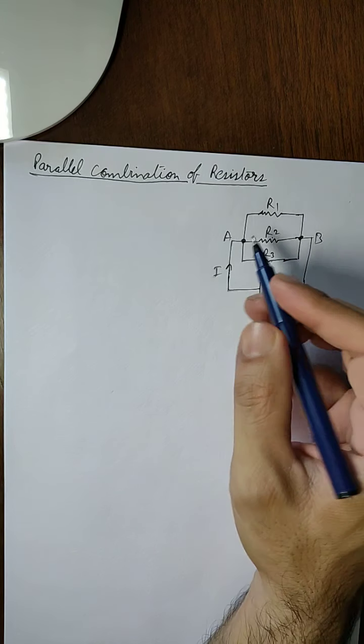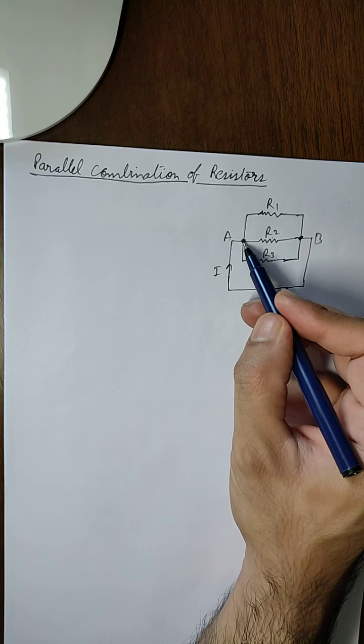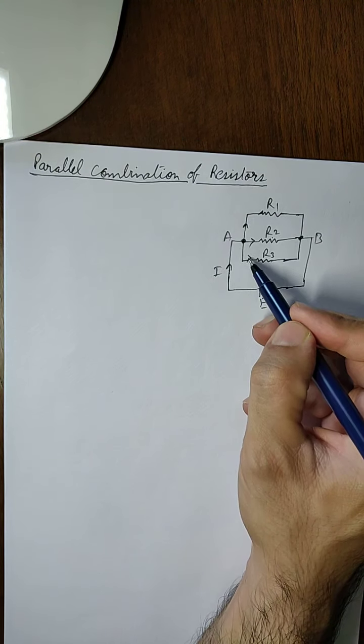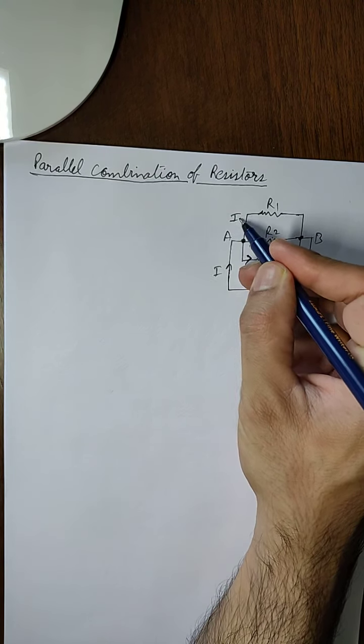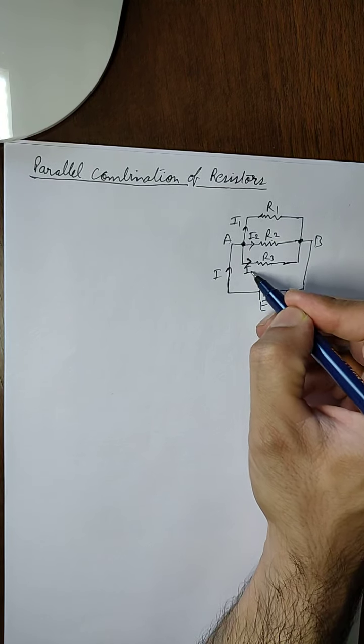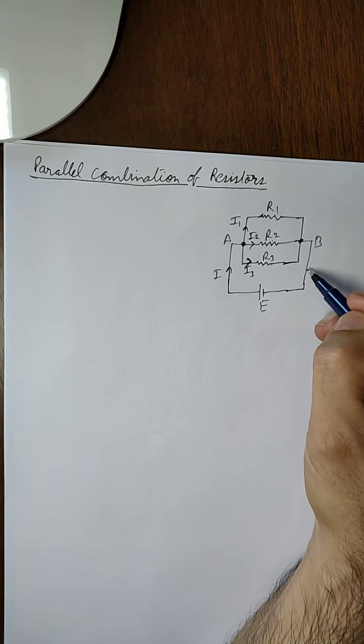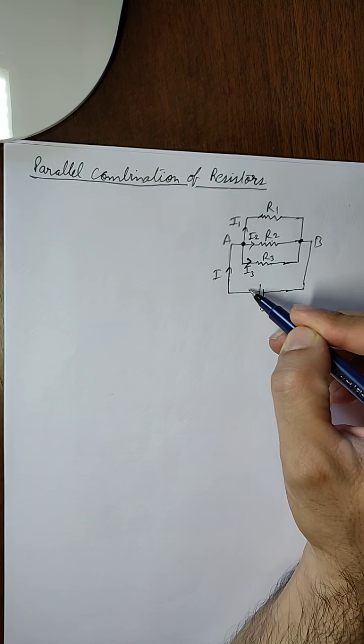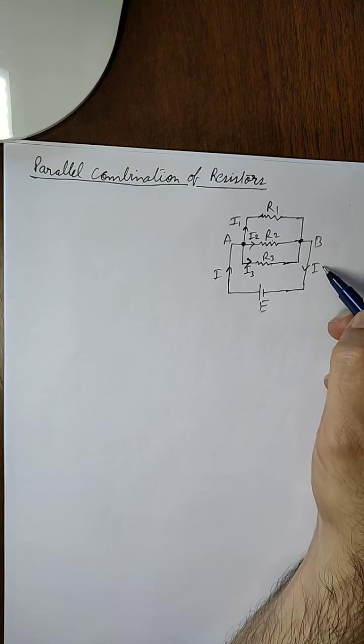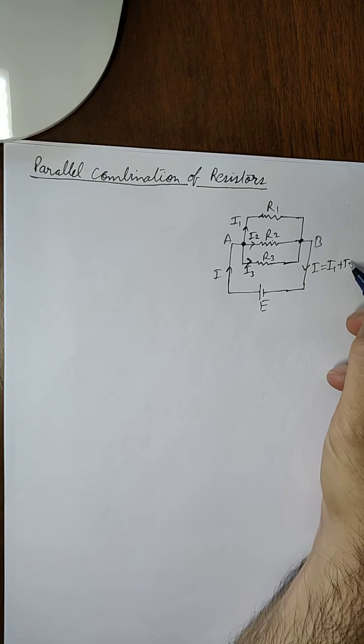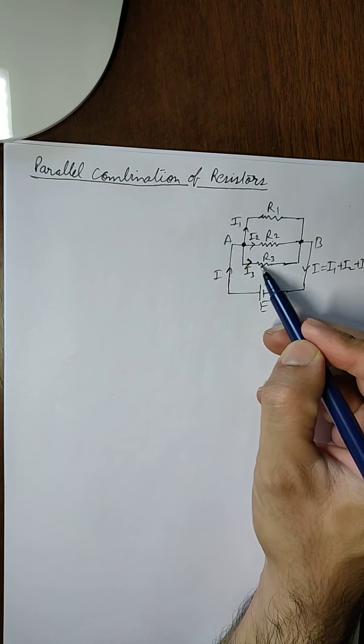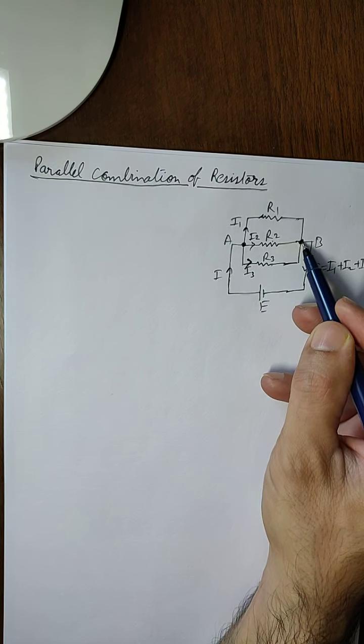Here we can see that the current coming out of the battery will be divided at this junction into three parts because the current is going in three branches. Let us say that current going in R1 is I1, current going in R2 is I2, and current going in R3 is I3. Since the current leaving the battery should be equal to the current entering into the battery, this will be I, and I will be equal to I1 plus I2 plus I3, because all these currents that were divided earlier will come through these branches and combine again at this junction.